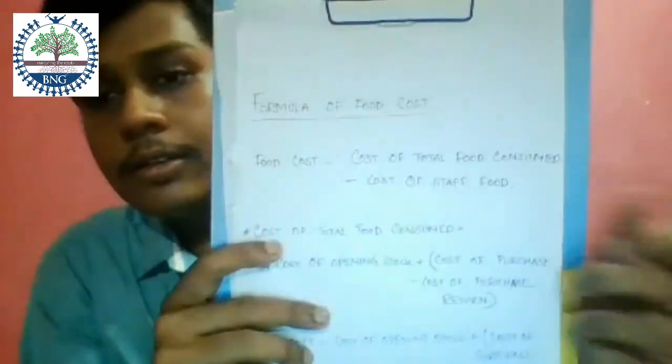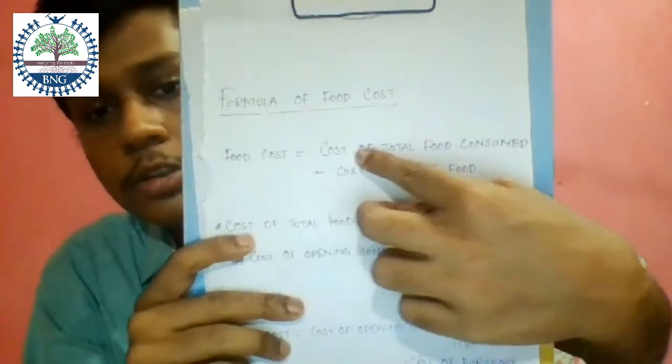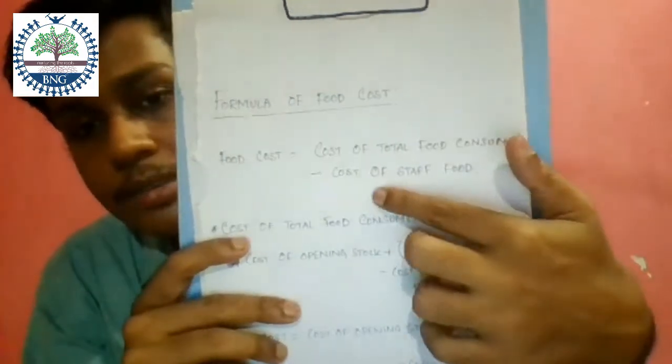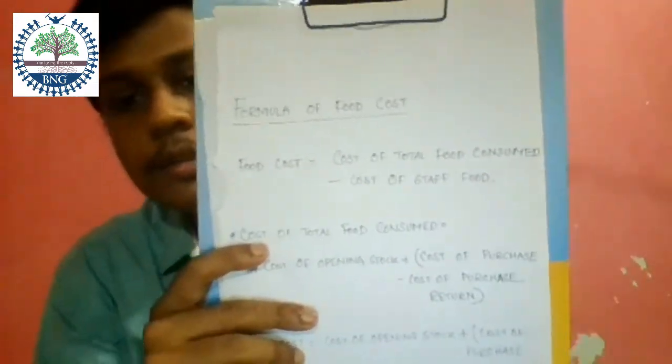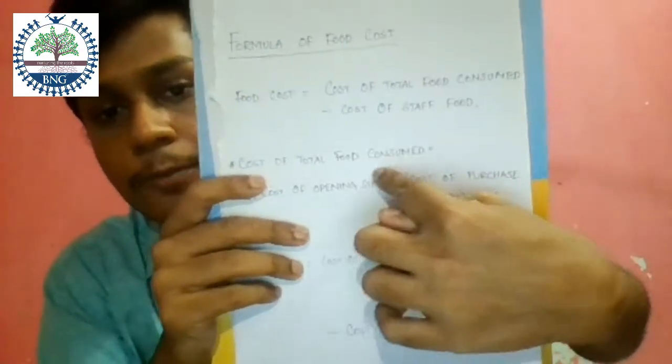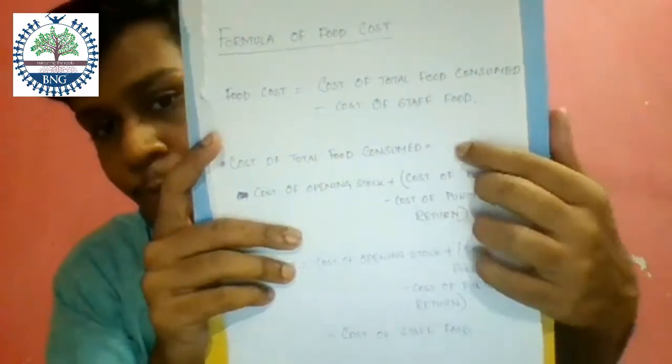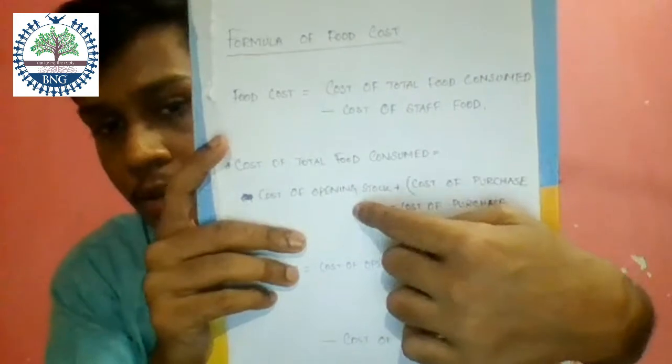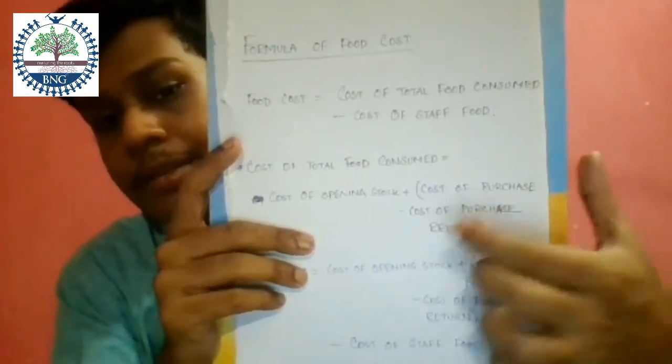From the definition, food cost equals total cost of food consumed minus cost of staff food. We deduct staff food because it is included in the labor cost. Now, the cost of total food consumed equals cost of opening stock plus cost of purchase minus cost of purchase returns.